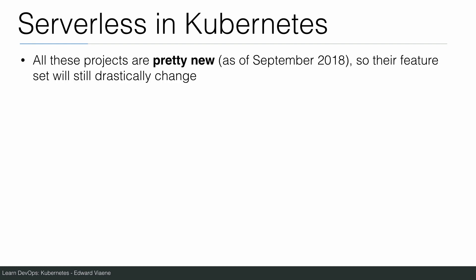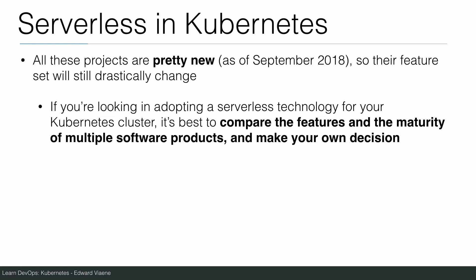All these projects are pretty new as of September 2018 when I created this lecture, so their feature set will still drastically change. Most of the projects are also still in alpha status, so some existing functionality can still change as well. If you are looking at adopting a serverless technology for your Kubernetes cluster, it's best to compare the features and maturity of multiple software products. All of these projects have a GitHub page where you can read about them and compare their features with what you need.